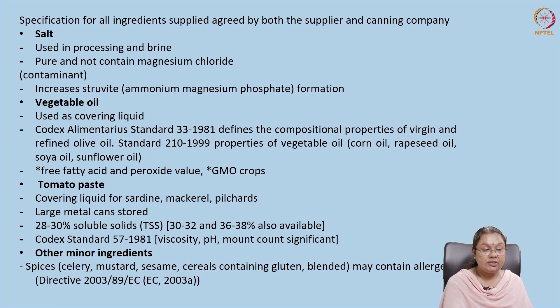In the canning industry, the common additives used include salt, which is a Class 1 preservative used in processing and brining. It should be highly pure and should not contain magnesium chloride or other contaminants, because magnesium will react with ammonium and phosphate in the tissue to form struvite. Struvite looks like small glass pieces; when you open the can you may find what appears to be broken glass on the surface. These are not harmful, but they are formed due to the reaction between magnesium, ammonium, and phosphate, and they interfere with the acceptance of the food product.